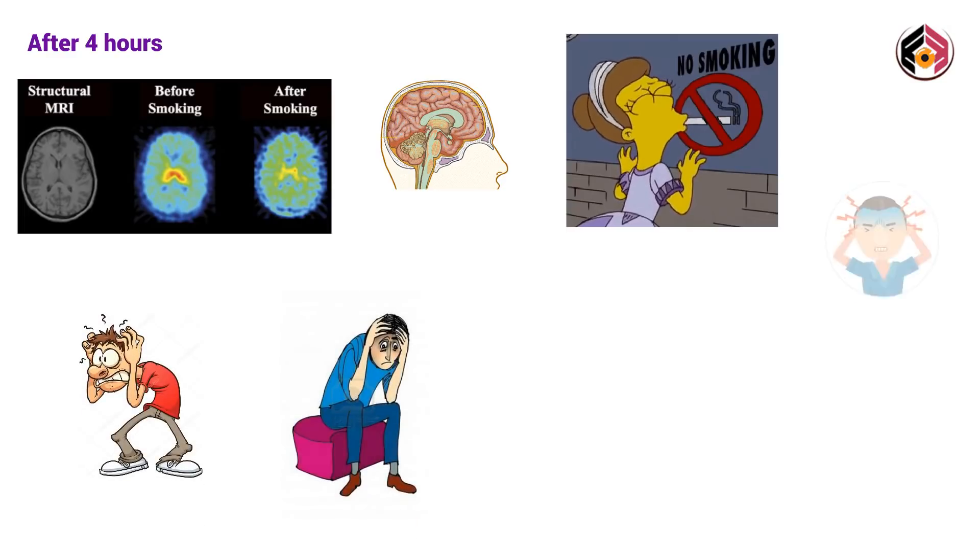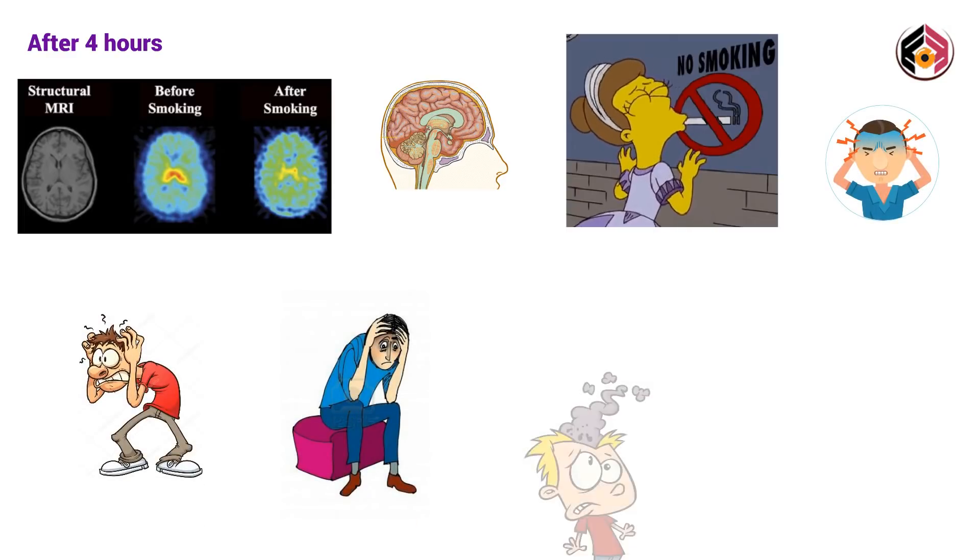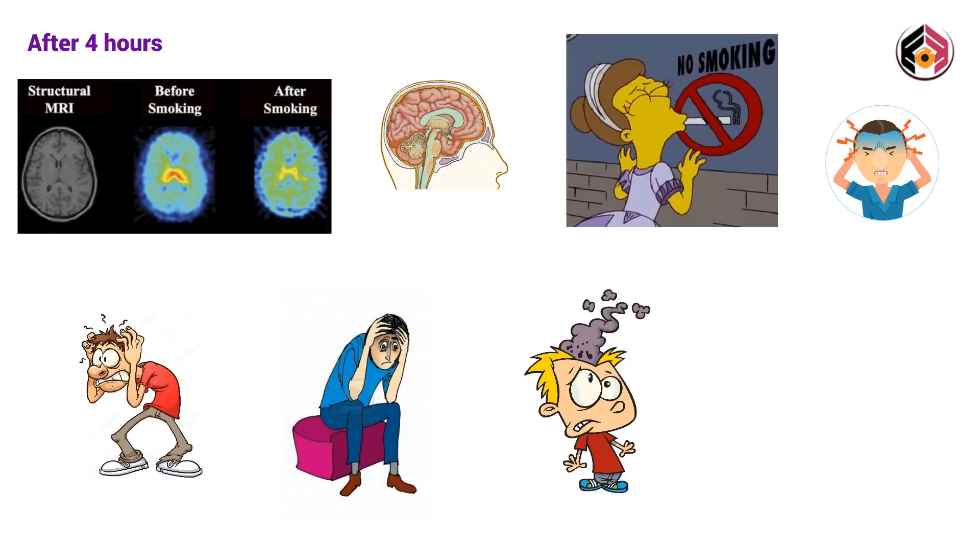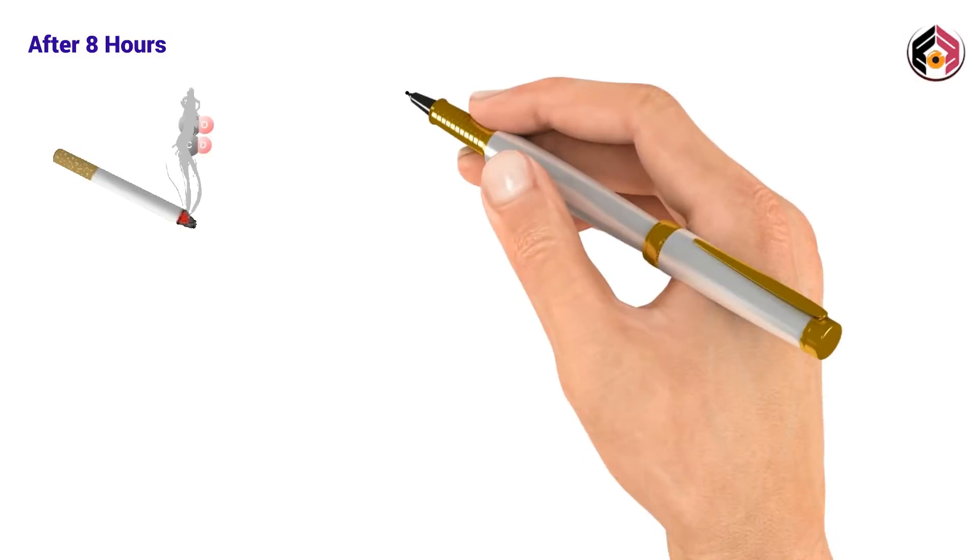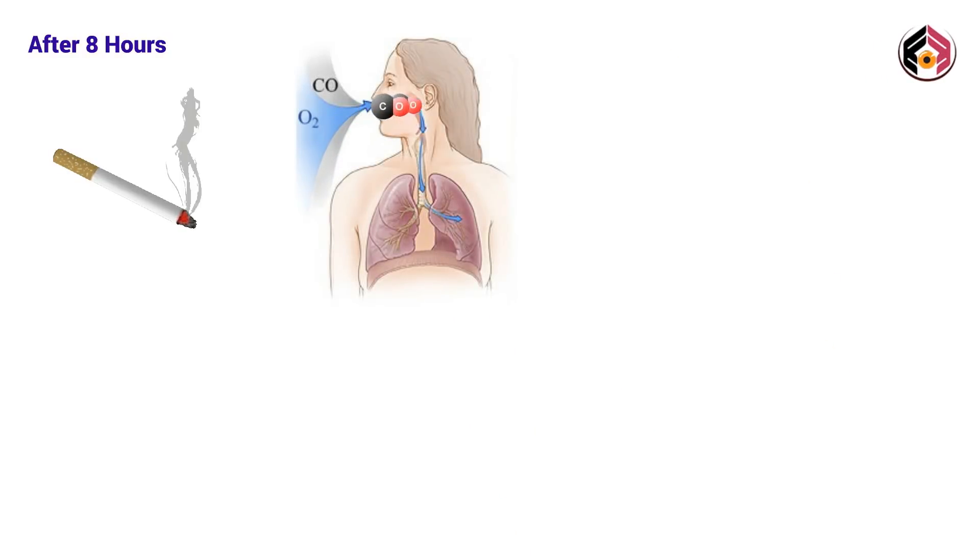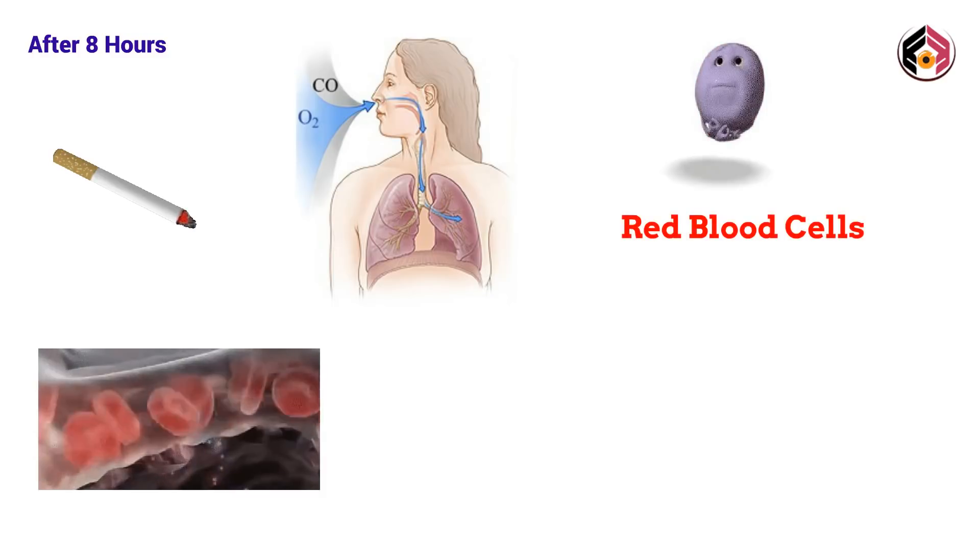Some people also face moodiness, drowsiness, and difficulty sleeping. After eight hours, carbon monoxide from burning cigarettes enters into the blood and combines with hemoglobin present in red blood cells. This process blocks the blood's ability to carry oxygen to body cells.